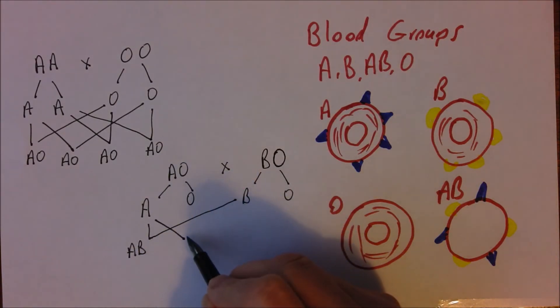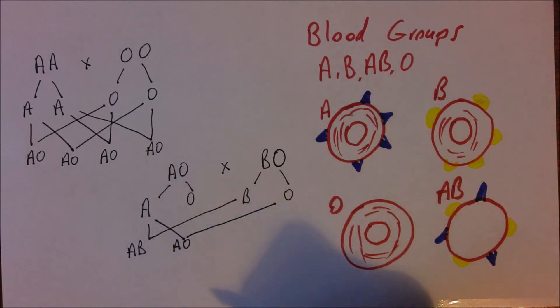But if we take A and O, this person will be AO. We can see they're heterozygous genotypically, but because the A is dominant, phenotypically they will have blood group A.